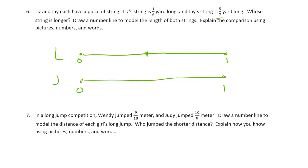Sixths are Liz's, so we need six marks — that's one. And we'll try to make thirds. Jay has sevenths, which are a little bit less. Jay has five sevenths: counting one, two, three, four, five. And Liz's string is four sixths: one, two, three, four. There.